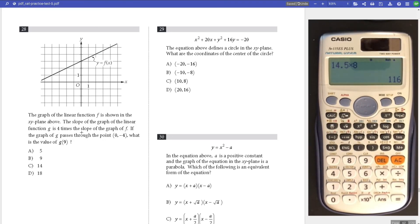Number 28, given this graph, G is four times the slope of this graph. If G passes through that point, what is the value of zero, negative four? The y-intercept. What's the slope here? Run is 2, rise is 1, M equals one half. So Y equals one half x minus 4. The M of G is actually 2x minus 4. Plug in 9, 18 minus 4 equals 14. Answer C.